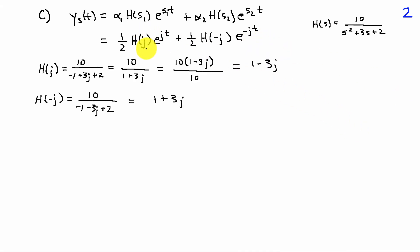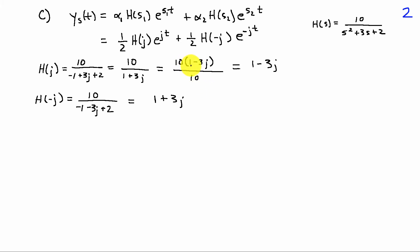We can solve for H(j) and H(−j) by plugging j in for s. We get 10 / (−1 + 3j + 2), which combines to 10 / (1 + 3j). Multiplying numerator and denominator by the conjugate (1 − 3j), the denominator becomes 10, giving us H(j) = 1 − 3j.